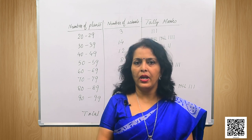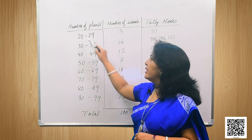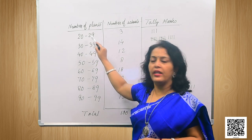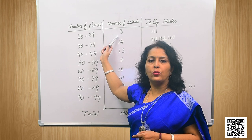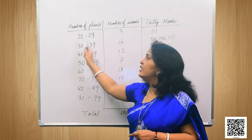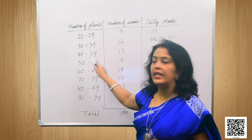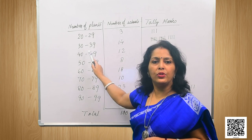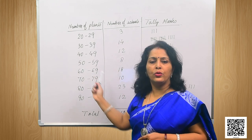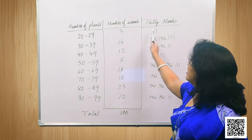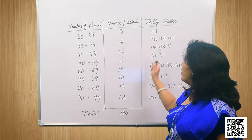Referring to the last example, I have drawn a frequency distribution table. All numbers from 20 to 29 are included in one class, and we found 3 schools with surviving plants in that range. The next category, 30 to 39, has 14 schools; 40 to 49 has 12 schools; 50 to 59 has 8 schools, and so on. I have also drawn tally marks alongside the frequencies.